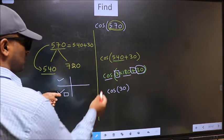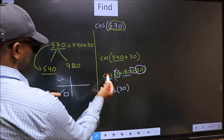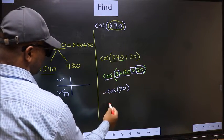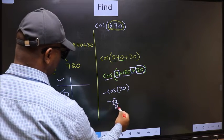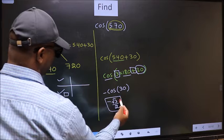And in the third quadrant, cos is negative. So, we should put negative. So, negative cos 30 is root 3 by 2. This is our answer.